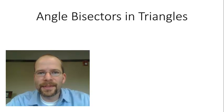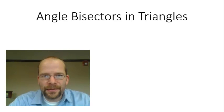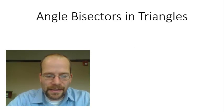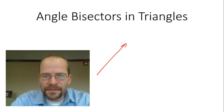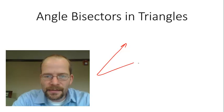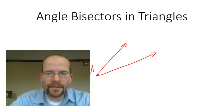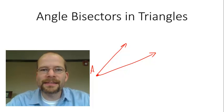Welcome to the geometry class. Today we'll talk about angle bisectors in triangles. Before we do that, let's review what an angle bisector is. You may remember that an angle consists of two rays, and those rays share a common endpoint. We call that endpoint the vertex, so we might call this angle A.